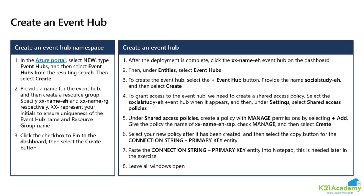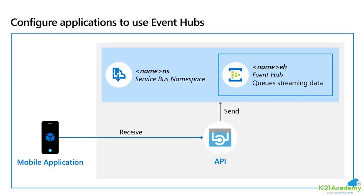In the lab, to create an Event Hub we perform two steps. First, we create the namespace — which is like a wrapper. Inside that wrapper, we create the instance of Event Hub, which is the actual publisher-subscriber that takes and forwards streams into multiple applications. You can have more than one Event Hub instance inside a namespace, each ingesting millions of events per second. To configure any application to talk to Event Hub, we use the connection string. In the lab, we'll copy the connection string, paste it into a simulator's configuration file, and when we run it, it will start posting data to the Event Hub.